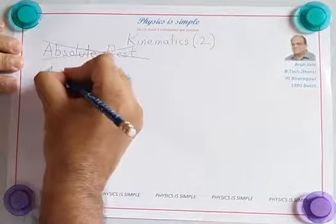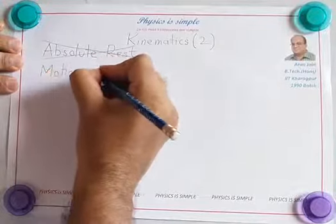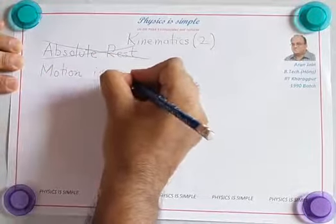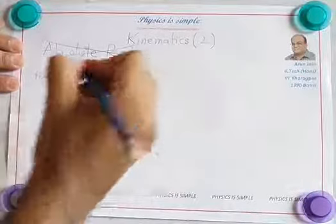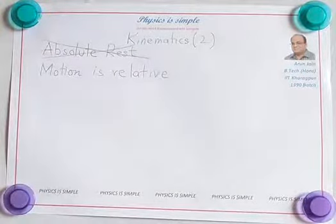Motion is relative. To decide whether an object is at rest or moving, we need to fix an observer first.